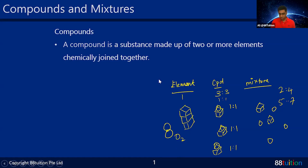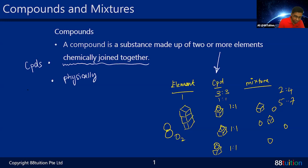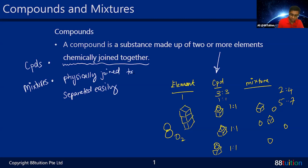A compound is a substance made up of two or more elements. So you need at least two different things combined — at least a pair or three. The key word is chemically joined together. The opposite is physically. For compounds they are chemically joined together. For mixtures they are just thrown into a box and can be separated easily because they are only physically joined together.